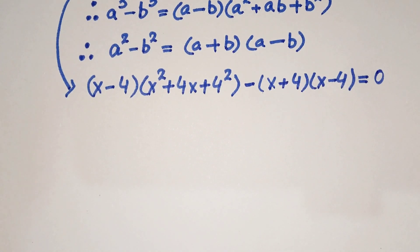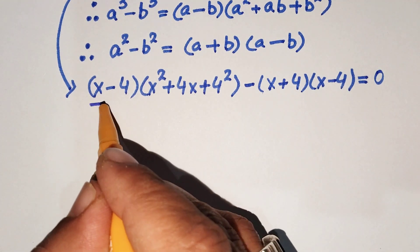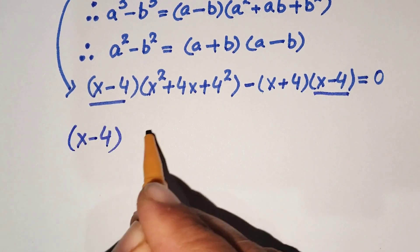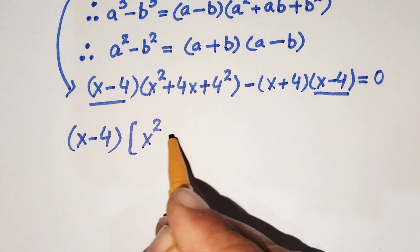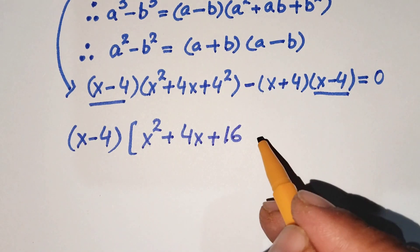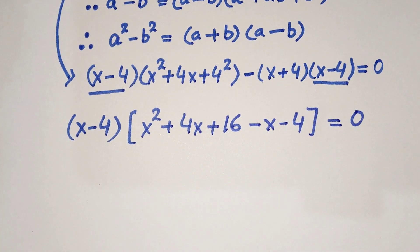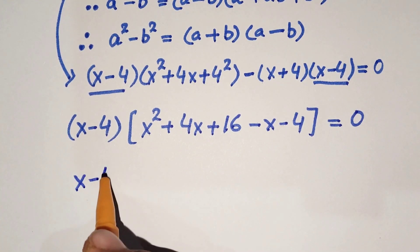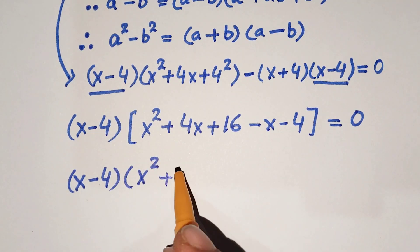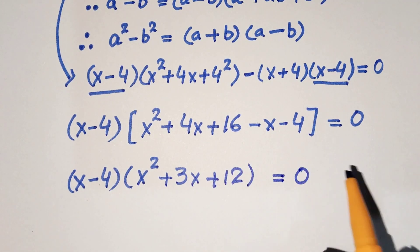We can see that (x minus 4) is a common factor. Factoring it out, we get (x minus 4) times [(x squared plus 4x plus 16) minus (x plus 4)] equal to 0. Simplifying inside the bracket: 4x minus x gives plus 3x, and 16 minus 4 gives plus 12. So we have (x minus 4)(x squared plus 3x plus 12) equal to 0.